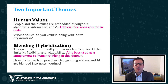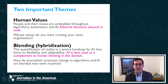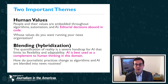Two themes I'd like you to come away with today are the importance of human values in algorithms, and this idea of blending or hybridization between algorithmic and human effort. The idea of human values relates to all the different subjective decisions that algorithms make — prioritizing, classifying, associating, filtering. There are all kinds of subjectivities embedded in those operations, which means that human subjectivities get built into algorithms, automation, and AI by the people that design and build these systems. That raises an interesting question: whose values do you want running your news organization? Whose values do you want embedded in your news algorithms?